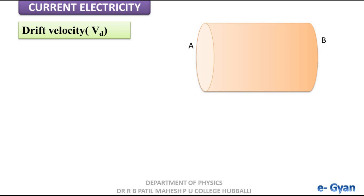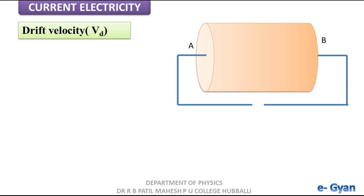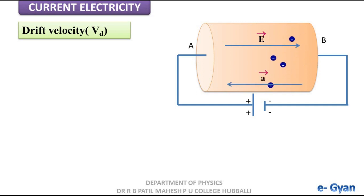In a particular direction, hence no flow of current in the conductor. Now when a potential difference is applied across the conductor, an electric field is set up in the conductor. Due to this electric field, the free electrons inside the conductor will experience a force, and this force accelerates electrons towards the positive end of the conductor. These electrons are moving with some additional velocity, and that additional velocity is called drift velocity.